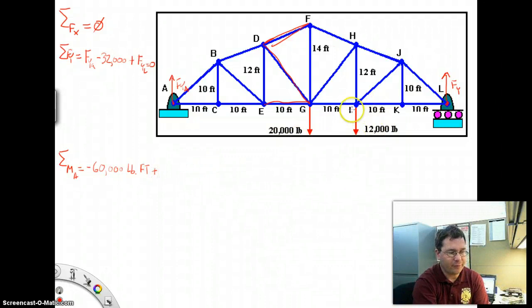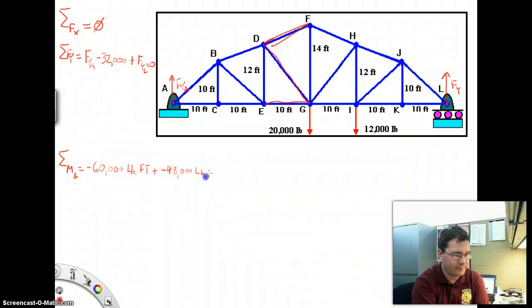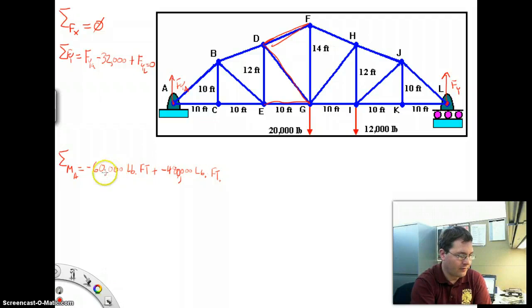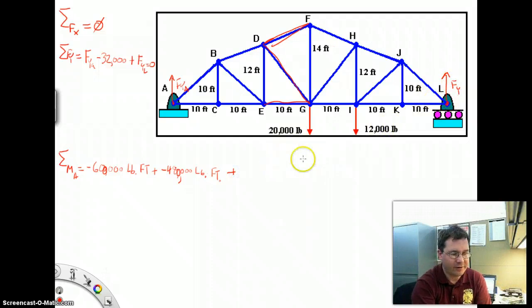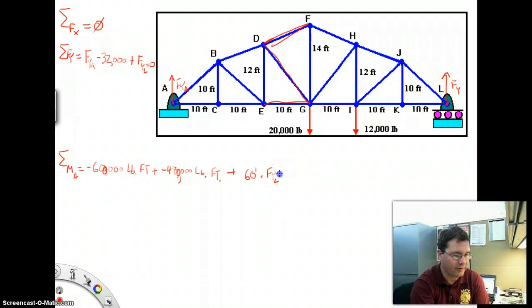So negative 600,000 pound-feet, because I have 20,000 pounds times 30 feet. Plus, I have this 12,000-pound force acting at a distance of 40 feet - that's producing a clockwise rotation. Negative 480,000 pound-feet. And to that, we need to add the force in the Y direction at point L. Point L is 60 feet. So 60 feet times the force in the Y direction at point L. This will be a positive number because the upward thrust at Y tends to produce a counterclockwise rotation. Equals 0.